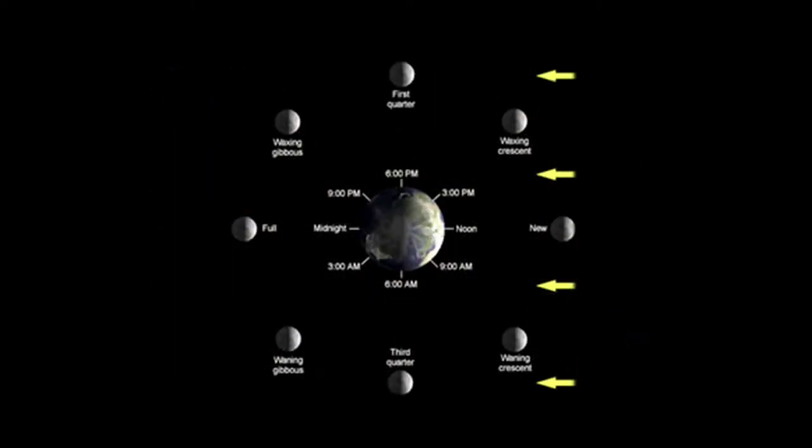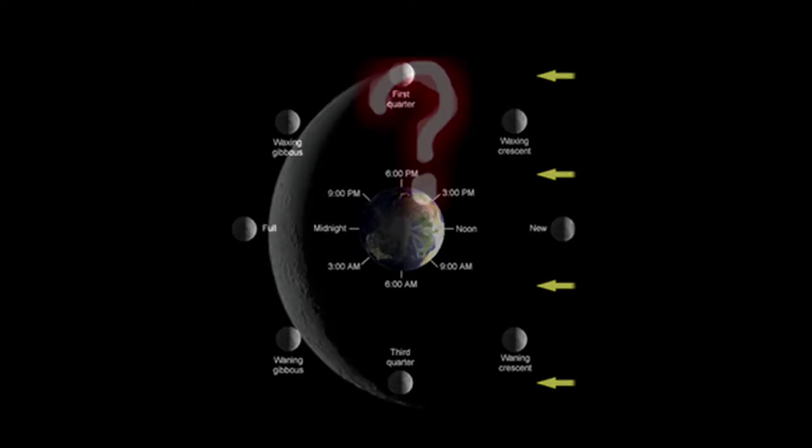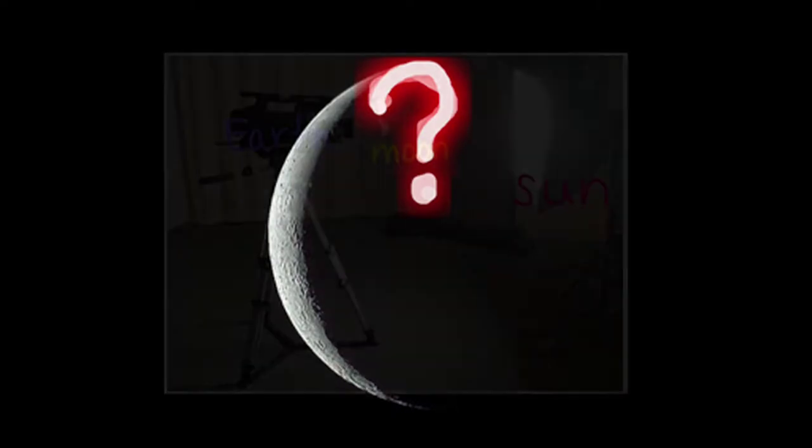First, it is important to understand that the sun always illuminates half of the moon, but on Earth we cannot always see the entire half. If this is true, then why do we see the moon differently day to day? Let's dive into this concept and get a better understanding of the moon's phases by doing a demonstration.